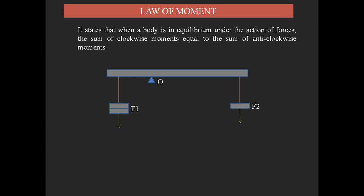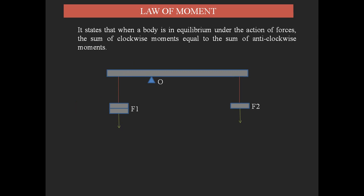F2 produces clockwise rotational motion because, with respect to point O, a force acting on the right side in the downward direction produces clockwise rotation. Similarly, F1 produces anticlockwise rotation with respect to point O. To apply the Law of Moments, we assume perpendicular distances: D1 from O to F1, and D2 from O to F2.